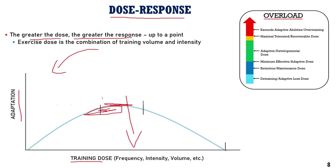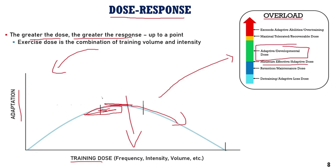At some point, we can actually apply, as we saw on the previous slide, an excessive training dose such that we're not even really able to optimally restore from it, let alone have positive adaptations. This is why we are often suggested to use the minimum effective dose, or at least try to be in the adaptive or developmental zone, being mindful that everybody has a maximum tolerated or maximum recoverable dose of exercise.